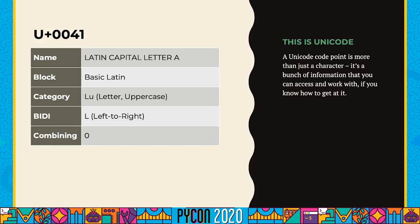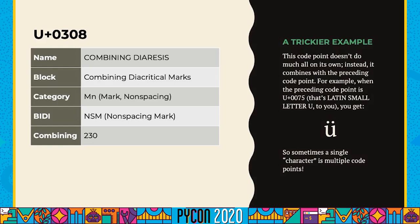Here's something a little more complicated: code point 0308, which by itself doesn't do anything — it wants to go with something else. When it does, it shows up as an accent mark, diaeresis, sometimes called an umlaut, or just dots. Its combining class value is 230, which says when rendering this in a sequence of code points, it shows up above whatever came before it. There are different combining class values for positioning and how different things combine to form a single visible glyph on screen or when printed.